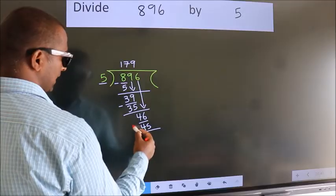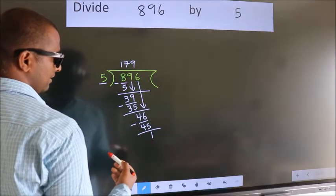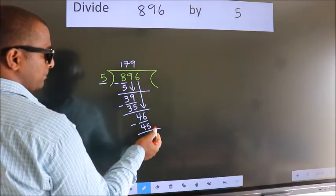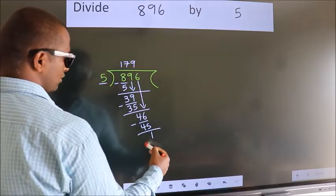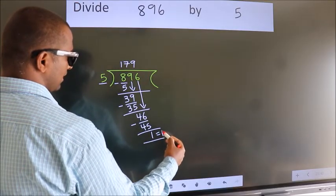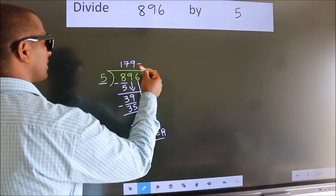Now, we subtract. We get 1. No more numbers to bring down. So, we stop here. This is our remainder. This is our quotient.